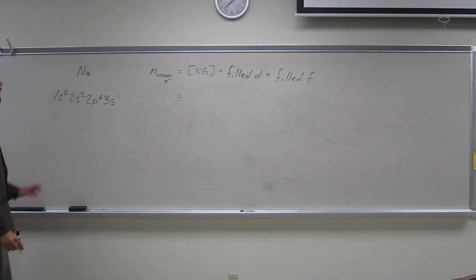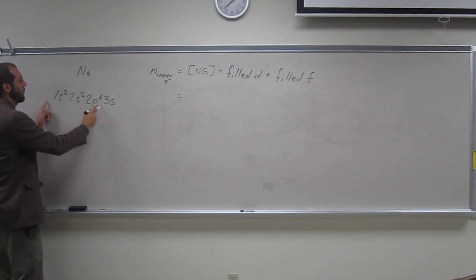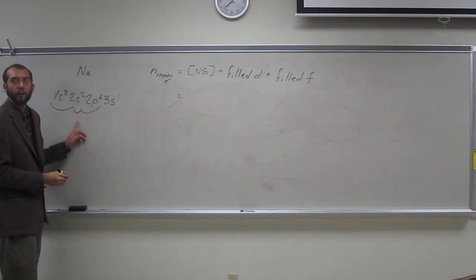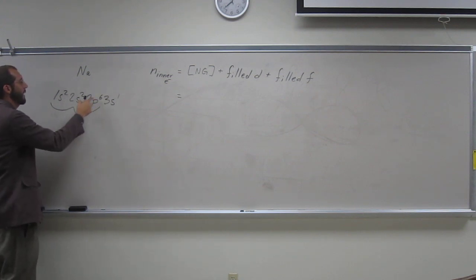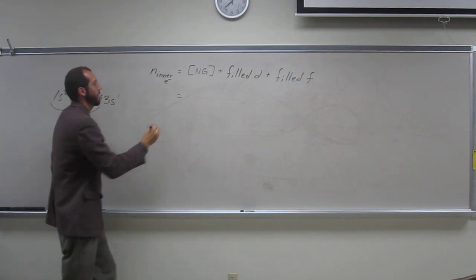When we do that, we should realize that this is the noble gas configuration there, noble gas neon. And it's got 2, 2, 6. So that's 10 electrons.